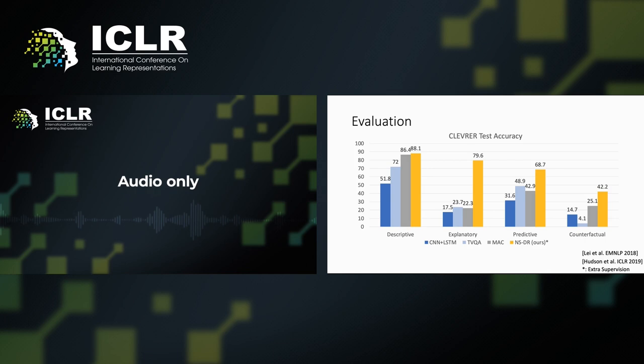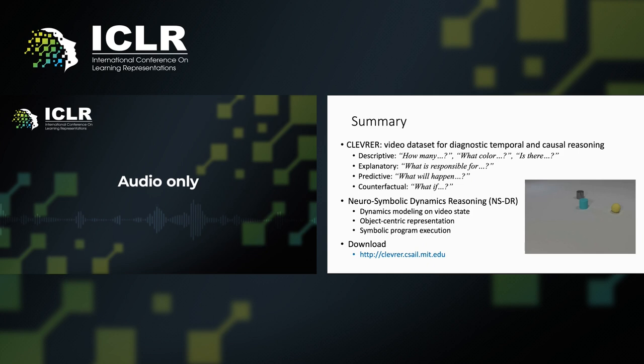Quantitative evaluation shows our model improves the performance on Cleverer, especially on the more challenging explanatory, predictive, and counterfactual questions. This shows that dynamics modeling is an essential key component for solving these tasks. In summary, we proposed a new dataset for studying causal reasoning on videos and studied a novel model on this task. Our experiments show that applying dynamics modeling on object-centric state representations of the videos sheds light on causal reasoning.